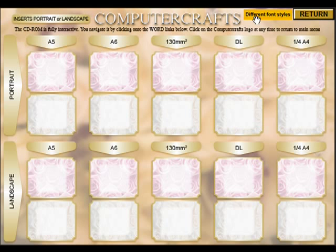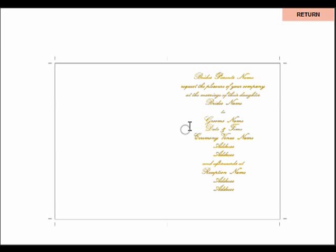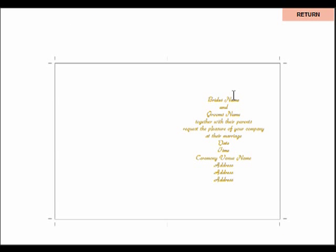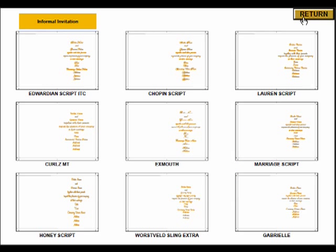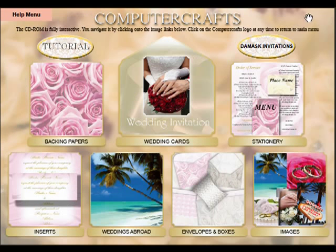If you come back to the inserts, click on here and you've got different font styles. If you copy and paste something from one of these, you can bring that typeface into your document — it will become available for you to choose, so you'll have all of these lovely wedding scripts as well. We also have informal wedding invitations — you can just click on, drag, copy and paste. These are really for a more informal wedding invitation, both in portrait and landscape.